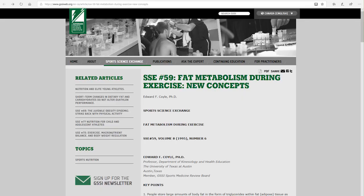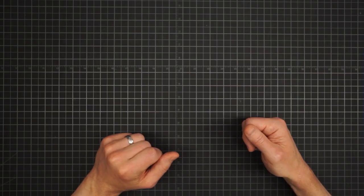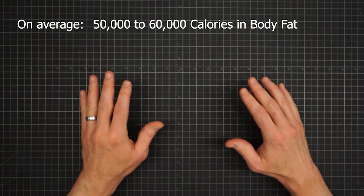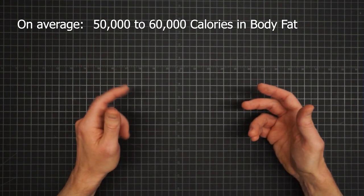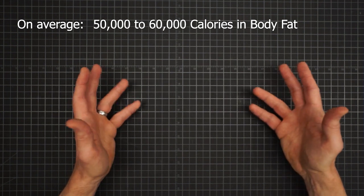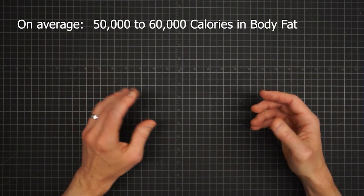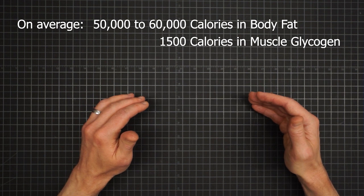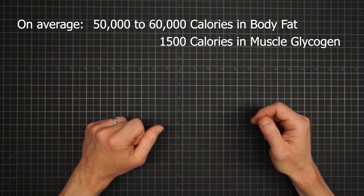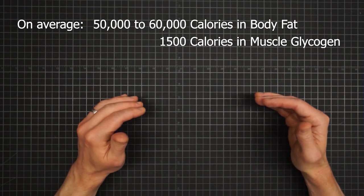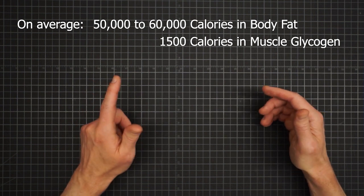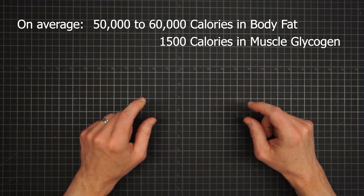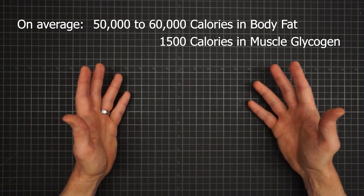For perspective, consider that the average person carries from around 50,000 to 60,000 calories in adipose tissue, which is your body fat. It's enough to fuel a walking pace for several hundred miles. In contrast, you're only able to store about 1,500 calories in muscle glycogen. And that's the limitation. As you start moving quicker and quicker, the percent of your energy coming from that precious, relatively small reserve of glycogen gets greater and greater.